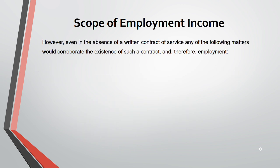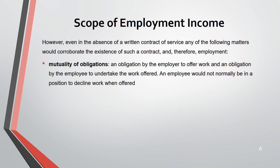Even when a written contract is not present, certain factors indicate employment. Number one is mutuality of obligation — there is an obligation by the employer to offer work and an obligation by the employee to take that work. When the employee is not in a position to decline work once offered, that indicates employment. The employer controls whether to hire, but once accepted the employee must comply.